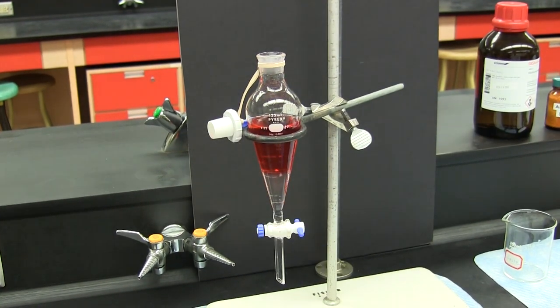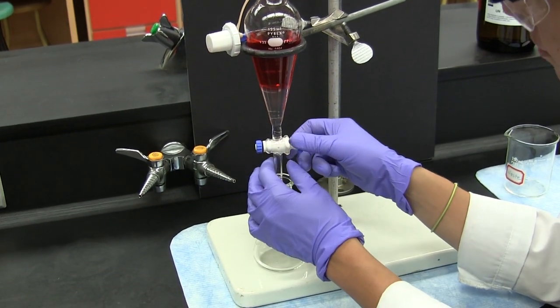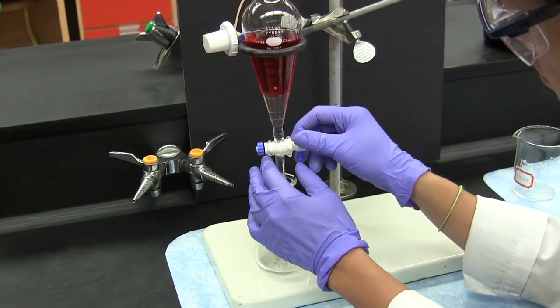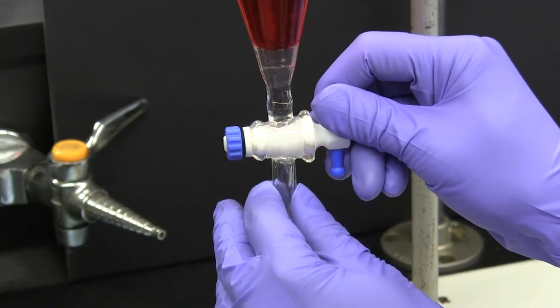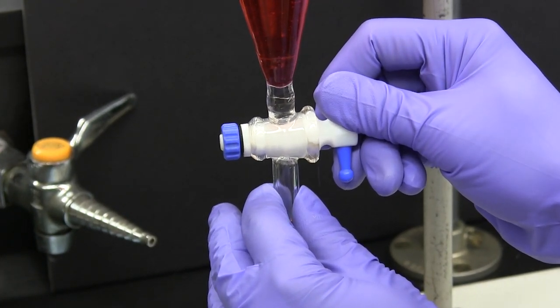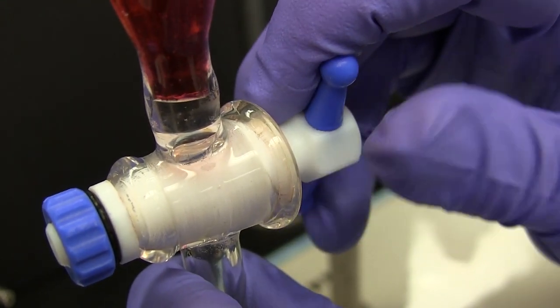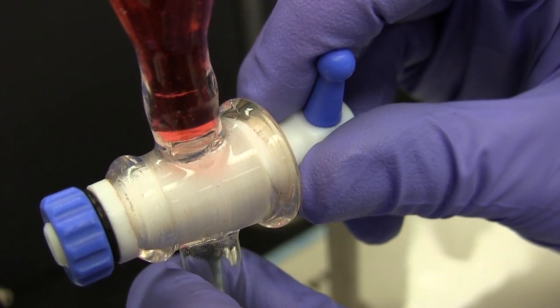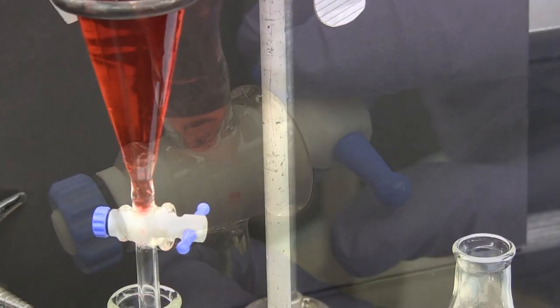A suitable container is placed underneath and the stopcock is opened, allowing us to collect the bottom dichloromethane layer. Watch carefully as the interface between the two layers moves towards the stopcock so that you are able to stop the flow once the entire lower layer has been removed. Partially close the stopcock to restrict the flow and watch carefully. You will achieve a good separation if you close the stopcock just as the interface flows into the top part of the stopcock.